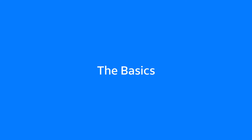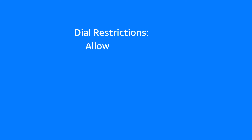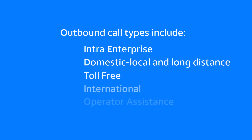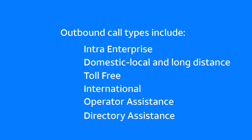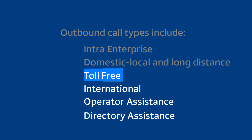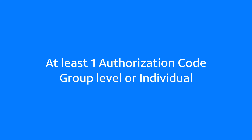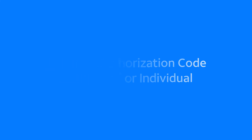First, let's start with some basics. The Dial Restrictions feature is used to allow, block, or require authorization codes for certain types of outbound calls. For example, if you didn't want users to make 800 calls unless they had a code, then you'd set the group restrictions to authorization code required for the toll-free call type. At least one authorization code needs to be created before it can be required, and Dial Restrictions can be set at the group level or for an individual user.